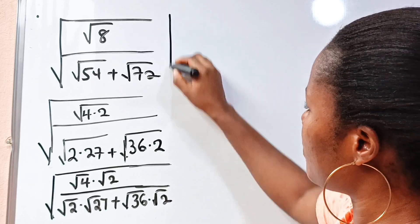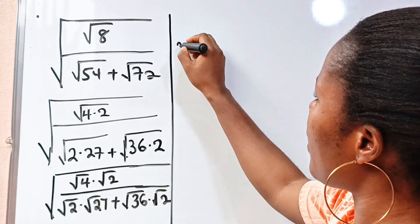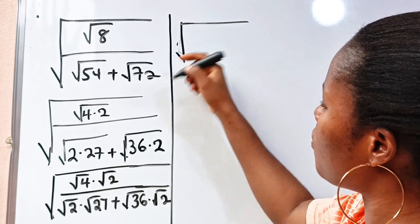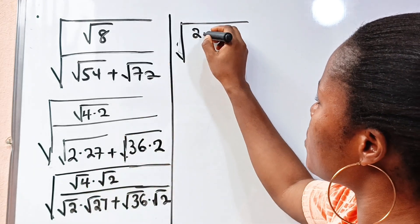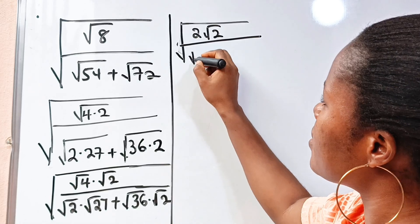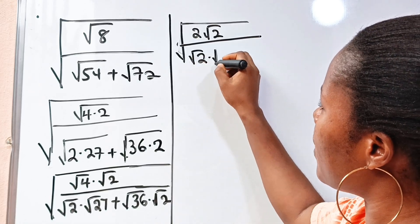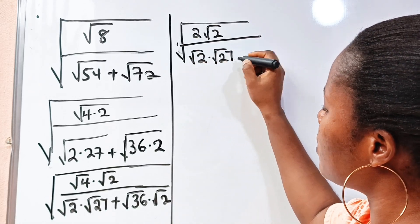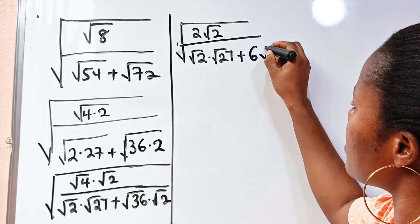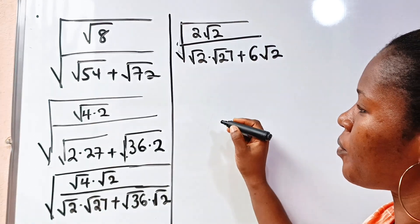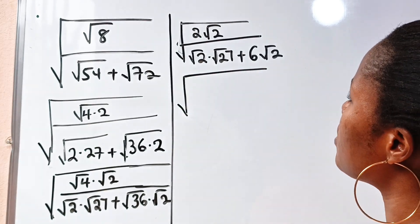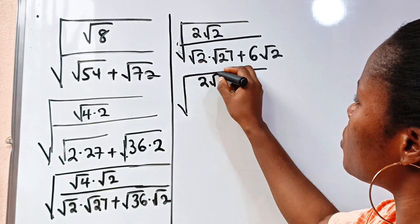So we have: square root of 4 is 2, so we have 2 root 2, divided by square root of 2 multiplied by square root of 27, plus square root of 36 which is 6, so we have 6 root 2 remaining here.